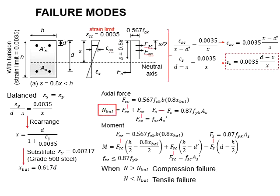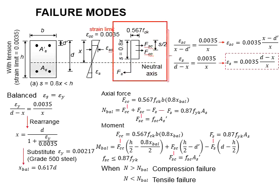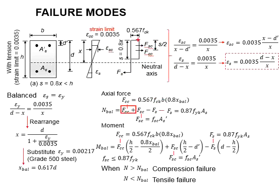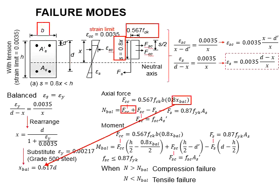Now we want to determine the actual force when the section is under balance conditions. This is obtained by referring to the stress plot diagram. The actual axial force of the column will be equal to the resultant of all the forces within the column. This includes FCC, the compressive force of the concrete itself, FSC, the compressive force due to the compression steel bar, and Fs, the tensile force of the steel in tension. FCC is obtained by multiplying 0.567fck with the height of the stress plot, which is 0.8 times x-balance.